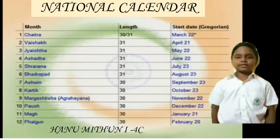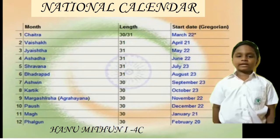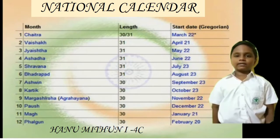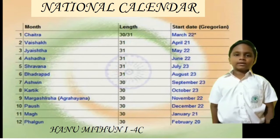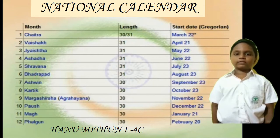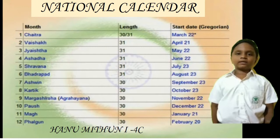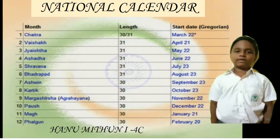The Saka era marked the beginning of the Saka Samvat, a historic Hindu calendar. It was adopted as the Indian National Calendar on 22nd March 1957. It consists of 365 days and 12 months. The Saka calendar is also used by Indonesian Hindus in Bali and Java.